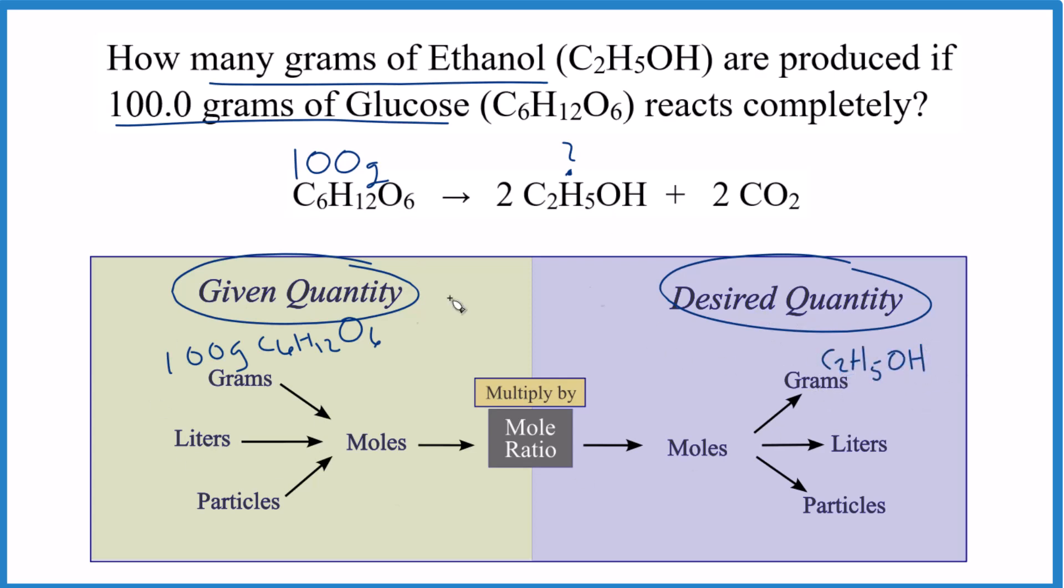This diagram helps us think about that. We have grams of glucose, we need to get that to moles, we use the mole ratio to get moles of ethanol, and then we'll change it back to grams. That's the process we will follow, and this is very typical for stoichiometry problems.